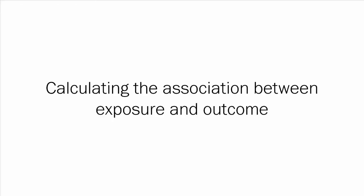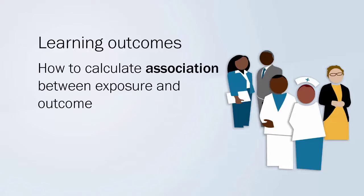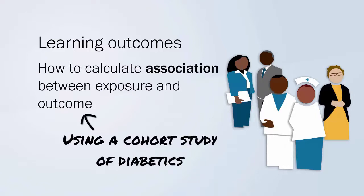Calculating the association between exposure and outcome. In this presentation, we consider how to calculate the association between exposure and outcome. We'll use the results from a study of a cohort of diabetics. This looked at the risk of developing diabetic retinopathy, given exposure to three different risk factors for the disease.